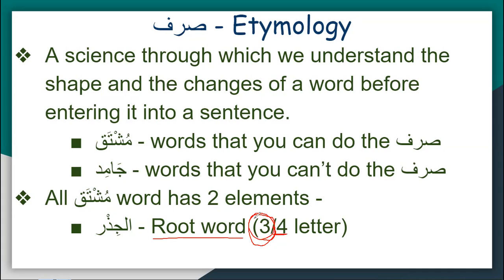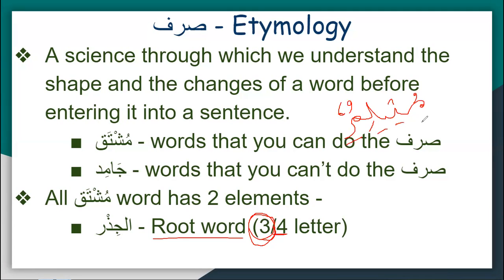So most Arabic words have three root letters. Take the word 'Muslim' — we know Muslim means a Muslim man. If you break it down, you'll see only three letters: Seen, Lam, and Meem are the original root letters, and the Meem at the beginning is just an extra thing. So every Mushtaq word has a root, and it also has a shape and a family.